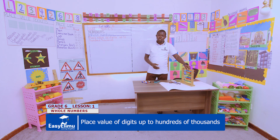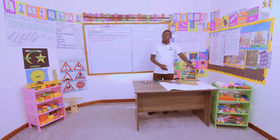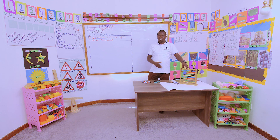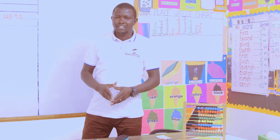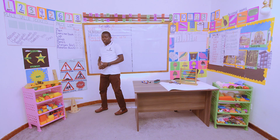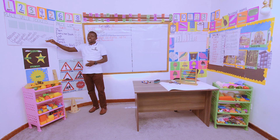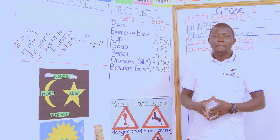In grade 5, you observed this instrument — what name did you give to it? This instrument is called an abacus. An abacus is an instrument used to identify the place value of digits in a number. Also in grade 5, you looked at this object — I'm calling it an object because I've drawn it. You will be using it on our chart or manila paper. This drawing is called place value pockets.